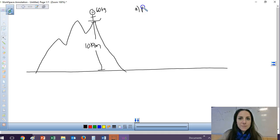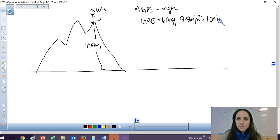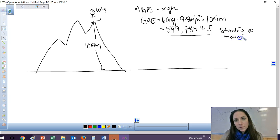So the first question is, what is the gravitational potential energy? So this is the energy associated with height. So to calculate my GPE, it's going to be 60 kilograms times the acceleration due to gravity of 9.81 times 1019 meters for the height. So let's go ahead and do that out. So 60 times 9.81 times 1019. So this gives me a pretty large value, 599,783.4, and the units is in joules. And surprisingly, this is just standing on the mountain. This is no motion.